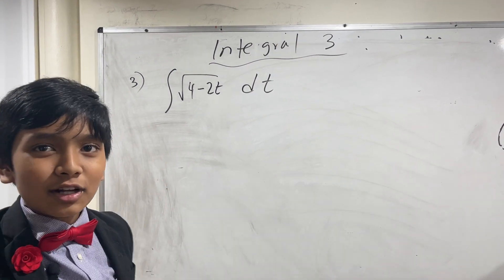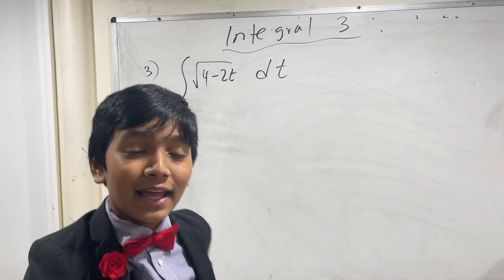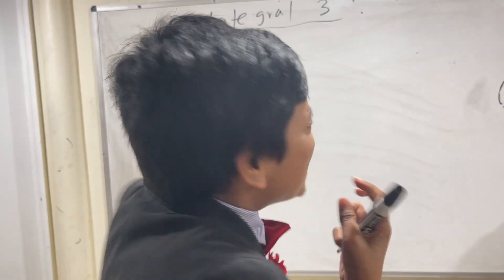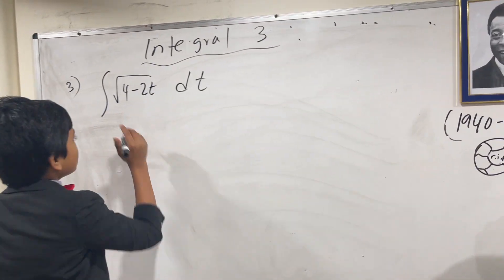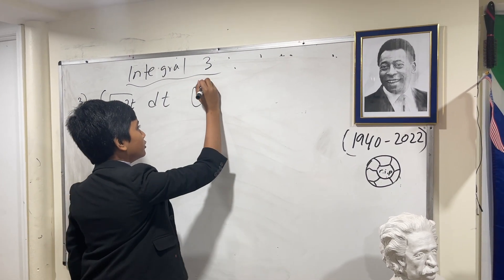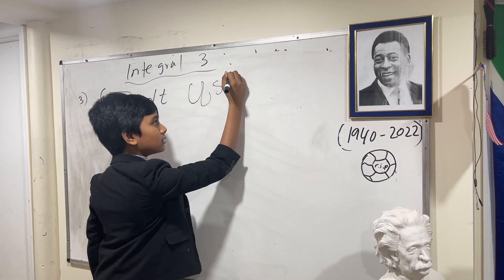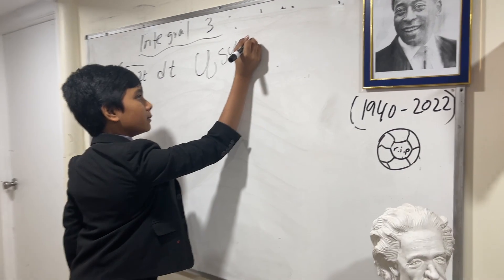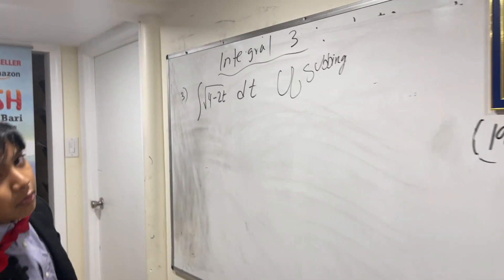Okay, so now it's no longer integral, but integral, like how it's supposed to be spelled. Okay, so now this is our first introduction to u-subbing. You've probably heard of it before if you're in calculus. But what is it?